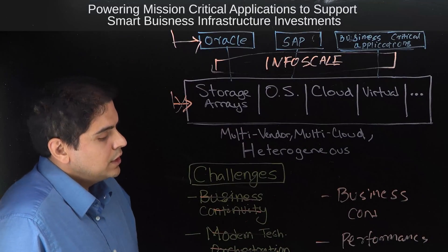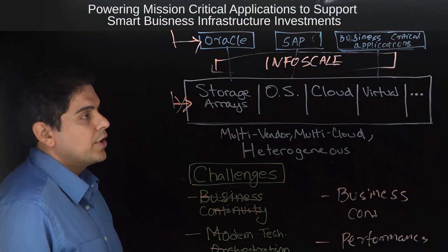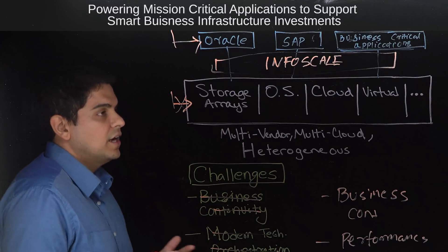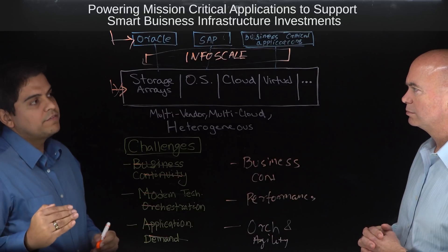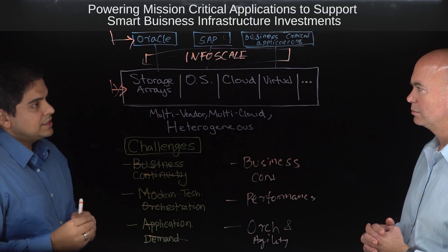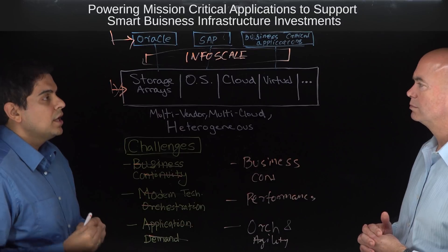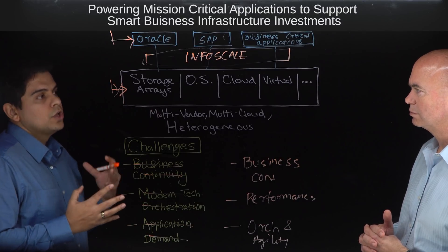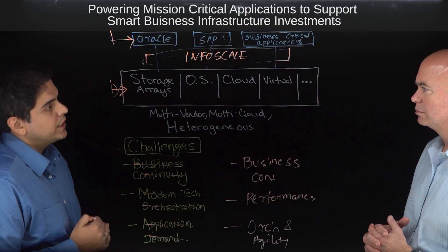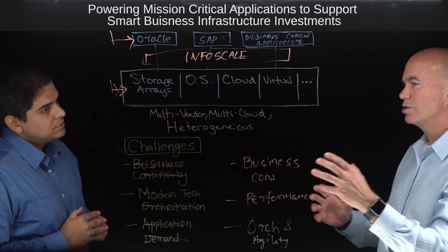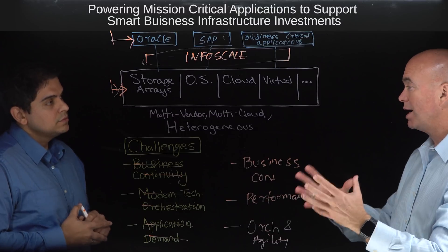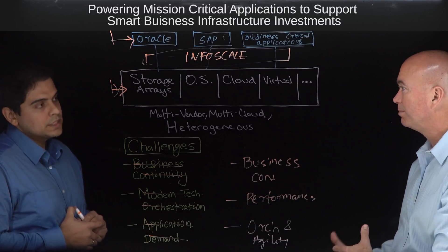When we talk about business continuity, InfoScale offers enterprise-grade capabilities regardless of where your applications are running — whether it's on-prem, virtualized, hybrid cloud, or multi-cloud. It has intelligent capabilities to quickly detect any issues with your application, as well as fast failover and DR capabilities for local, metro, and geo architectures. You can use that to meet your custom business continuity and application availability requirements — including using the same tool for HA in the cloud as on-prem.